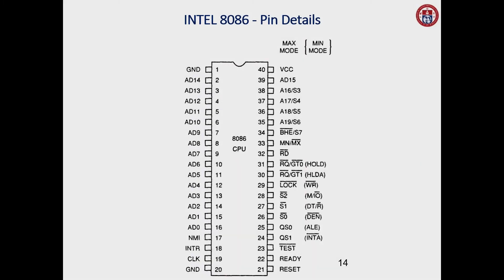The next important pin is pin number 33, which decides whether the processor is working in minimum mode or maximum mode. When pin number 33 is high, it works in minimum mode. When it is low, it works in maximum mode. In minimum mode, only one processor — the 8086 — is available. In maximum mode, more than one processor is available, including co-processors, loosely coupled processors, and closely coupled processors.